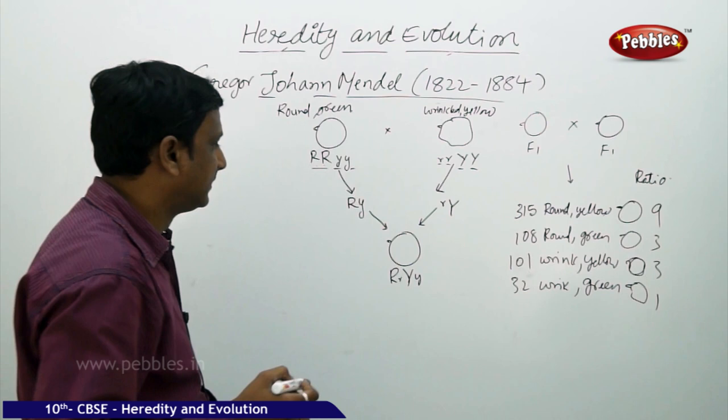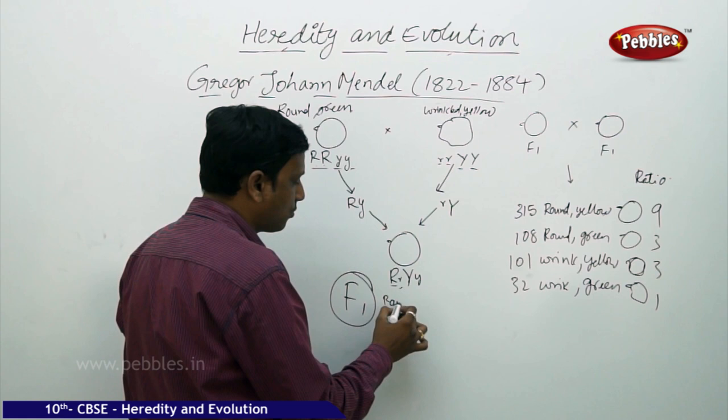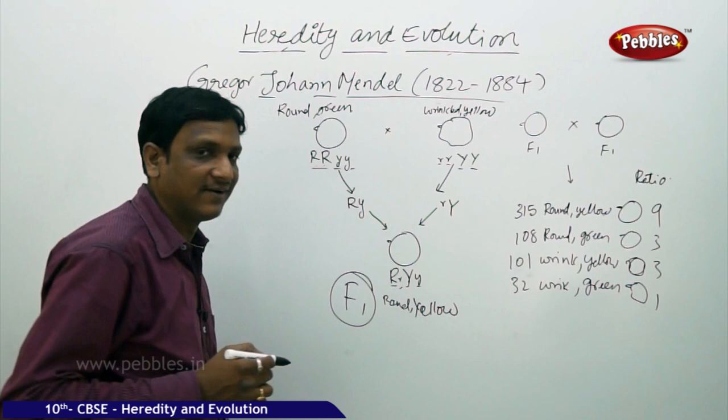Both plants are crossbred. In the first generation F1 progeny, you get capital R, small r — round is the dominant character, so you get round. And capital Y, small y — capital Y denotes yellow. So you get round and yellow seeds in the F1 progeny of the first generation.